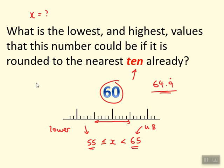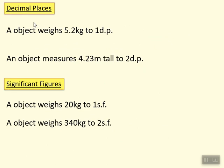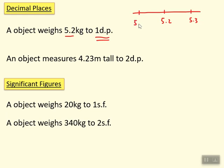In a minute I'll show you a trick for how to find the upper and lower bound in about two seconds, but let's just look at some examples first. An object weighs 5.2 kilograms to 1 decimal place. How can we find the upper and lower bound? If I draw a number line with 5.2 in the middle, 5.3 to the right, and 5.1 to the left — what are the smallest and largest numbers that round to 5.2?